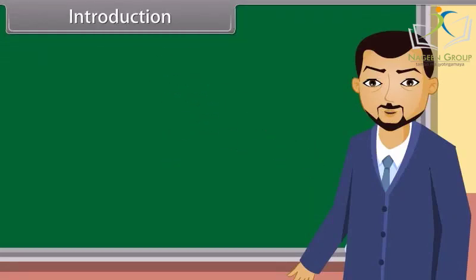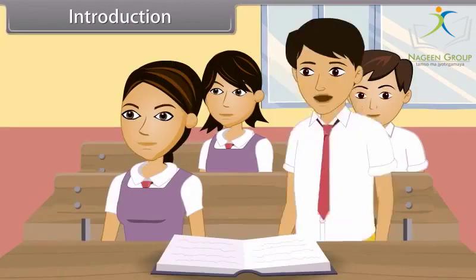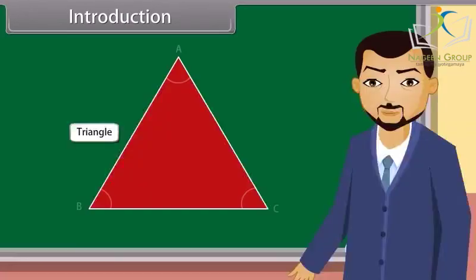Students, you must have studied about closed figures. Now, what do we call the figure which is formed by three intersecting lines? A triangle, sir! Yes, you are right, Rahul. A triangle. It has three sides, three angles and three vertices.